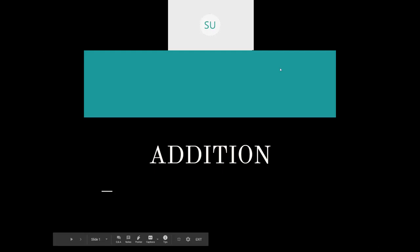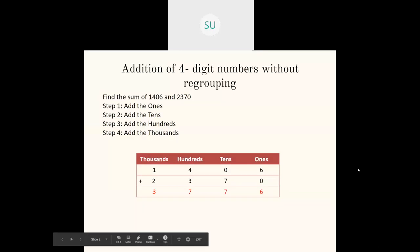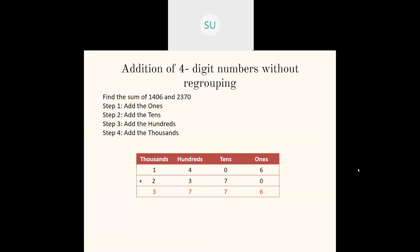Previously in third standard you'll have studied addition of numbers without regrouping. In addition of four-digit numbers without regrouping, what you do first is you add the ones, then you add the tens, then add the hundreds, and then add the thousands, and you will get your answer.